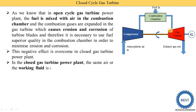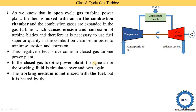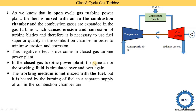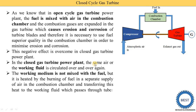In a closed cycle gas turbine power plant, the same air or working fluid is circulated over and over again. The combustion product is not circulated in the full system — only the working fluid. The working fluid may be air, helium, argon, or some other working fluid. Combustion product is not circulated through all the components; only the working fluid is circulated. Due to that, erosion and corrosion chances are reduced in the turbine in a closed cycle power plant.